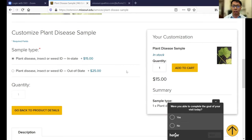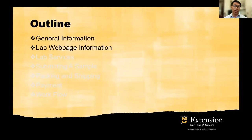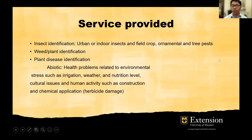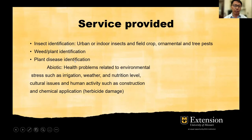We allow credit card and also PayPal payment methods. Now let's talk about the lab services — what services we provide from the MU Plant Diagnostic Clinic. We offer services including insect identification, weed identification, and plant disease identification. For insect identification, we have a group of entomologists and we're able to identify urban and indoor insects, as well as field crop, ornamental, and tree pests.